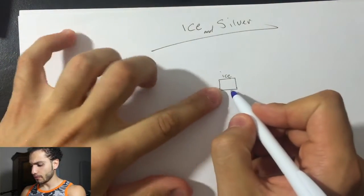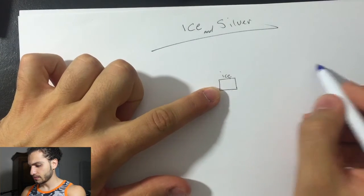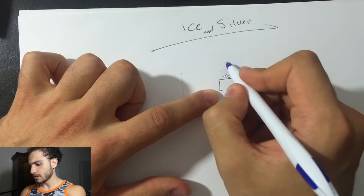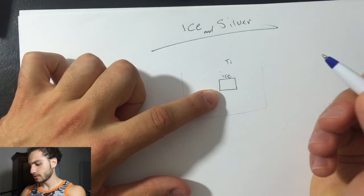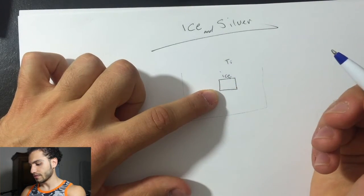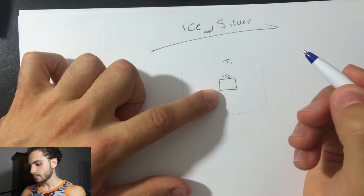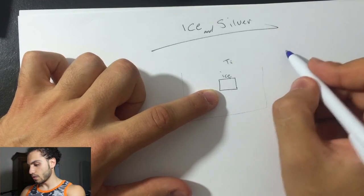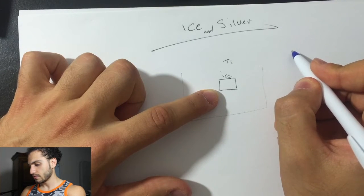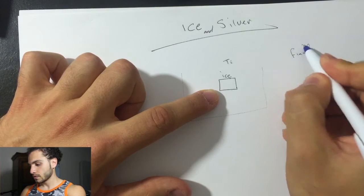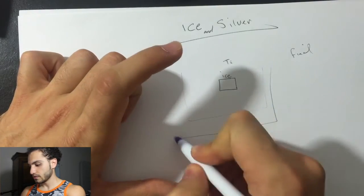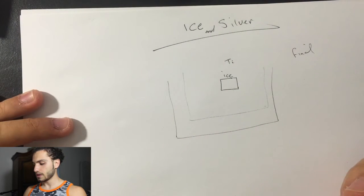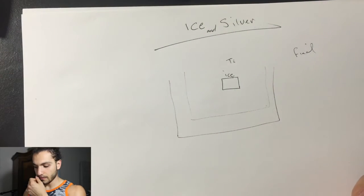Alright, so we have this cube of ice and we have silver. I think it's a bucket of silver. So it has a temperature that started on, let's call it TI, temperature of ice 1. And then they want us to know what's the final temperature. The silver, it has temperature too. So they want to combine both of the system and see what's the temperature results in it.